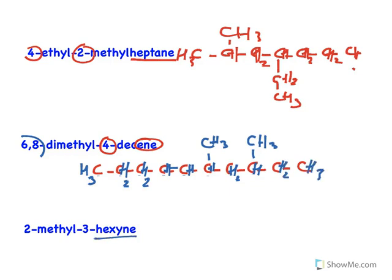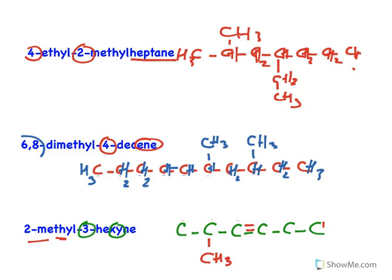Now, hexyne: six carbons, so we draw one through six. The '-yne' indicates a triple bond, which is on the third carbon — so the triple bond is between C3 and C4. On the second carbon there is a methyl group substitution. The two carbons of the triple bond cannot take any more hydrogens as they are fully bonded. The remaining carbons take one and three hydrogens respectively.